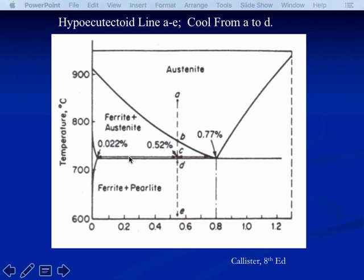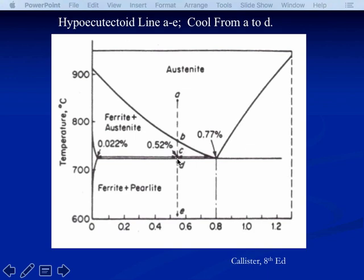When we cross the eutectoid line to just below it — notice this is a two-phase region of ferrite and pearlite — the remaining austenite at point C holds 0.77% carbon. If you do your tie line at point C, the austenite has 0.77% carbon and the ferrite only 0.02%. So there's a lot of carbon in the austenite. But when you cool just a tiny bit below the eutectoid, suddenly there's no austenite left to absorb all of that carbon.